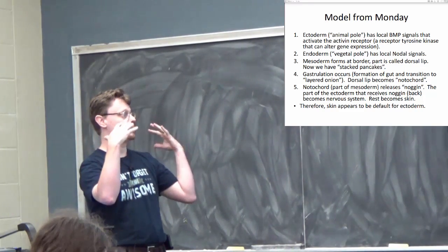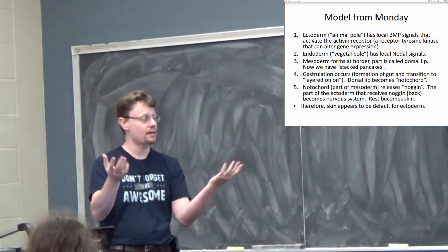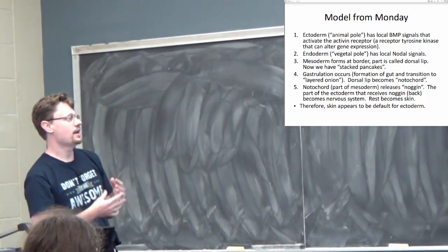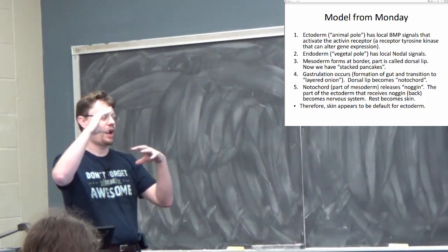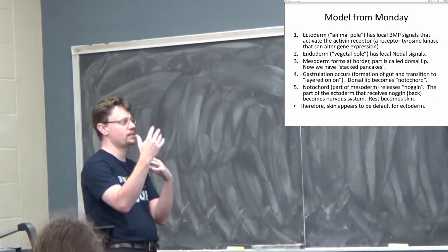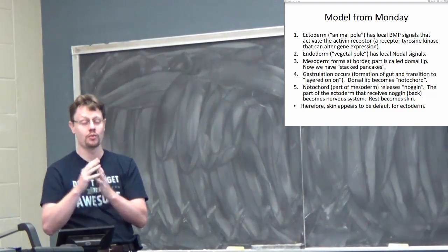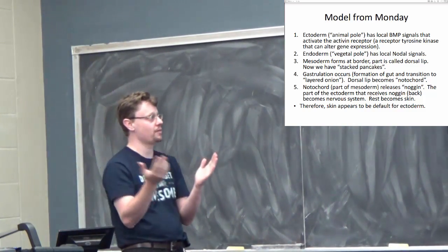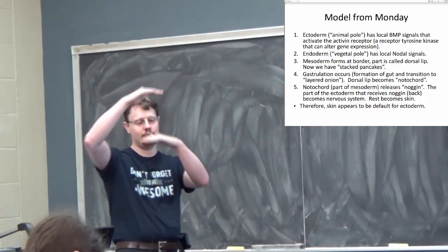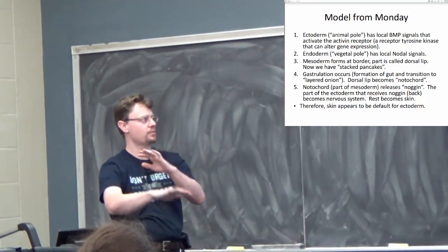The endoderm is the vegetal pole. It's got its own local signal, nodal. There's a nodal receptor. Then at the border, we've got these outcast cells that don't fit in with either clique, and they're getting both signals. They get confused, or they don't really get confused, but they know the presence of both signals. They should become the mesoderm. So we've got this stacked pancake arrangement: ectoderm on top, mesoderm in the middle, endoderm on the bottom.